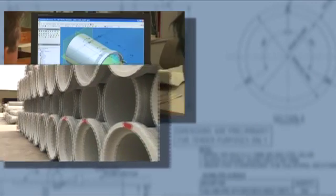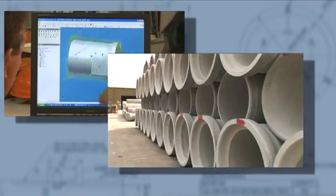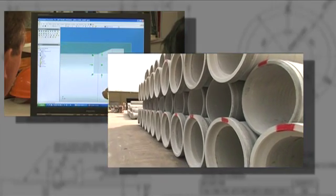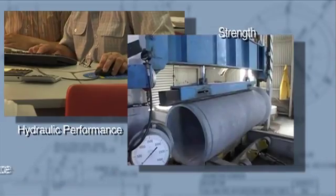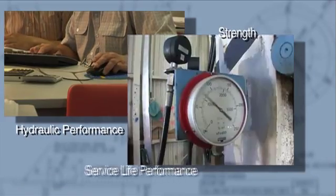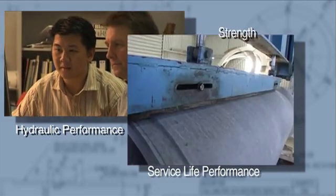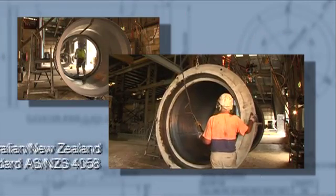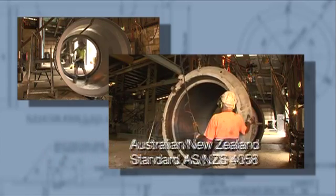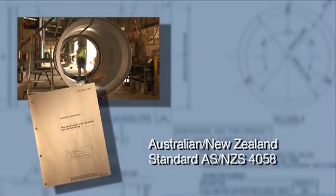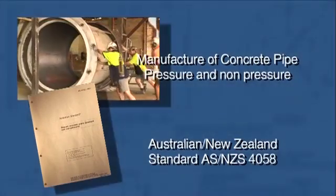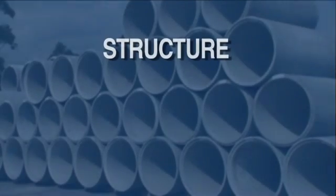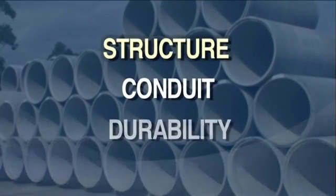While the project design team is responsible for the pipeline design, the actual pipe design is the responsibility of the manufacturer. The pipe needs to have the requisite strength, hydraulic performance and service life performance to meet the project design team's expectations. Steel reinforced concrete pipe has to be manufactured to meet the requirements of the Australian and New Zealand standard ASNZS 4058, precast concrete pipe, pressure and non-pressure, and to satisfy the criteria of structure, conduit and durability.